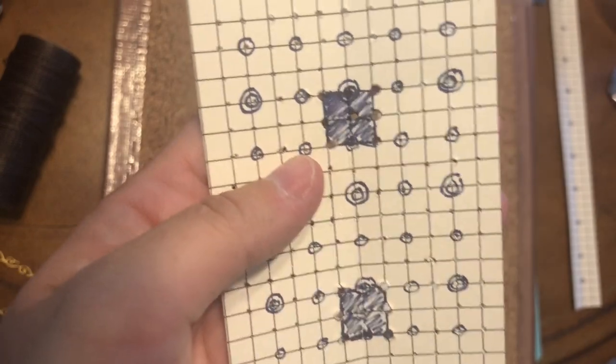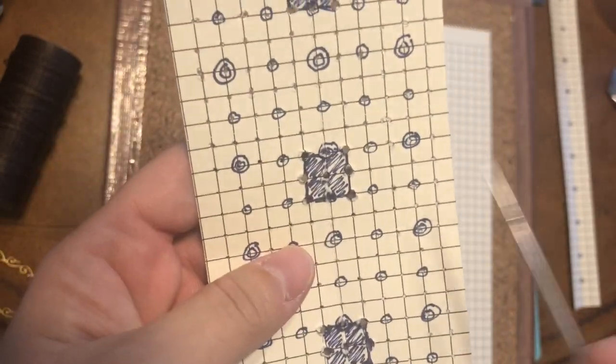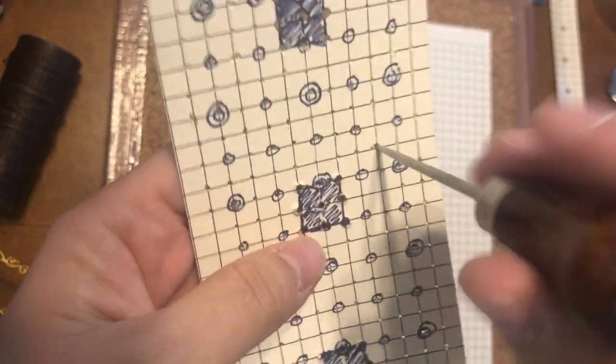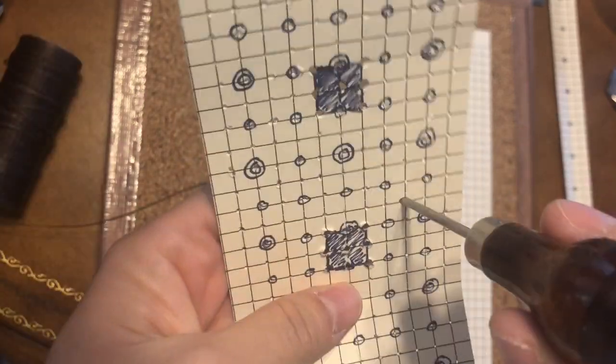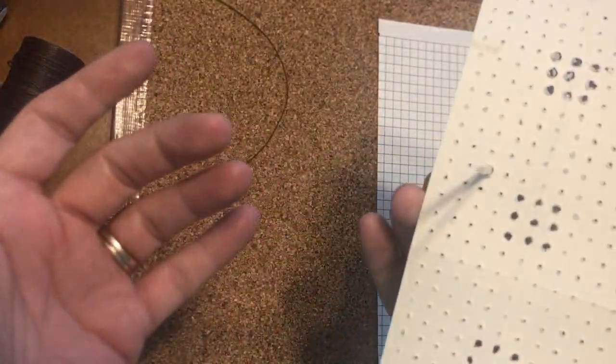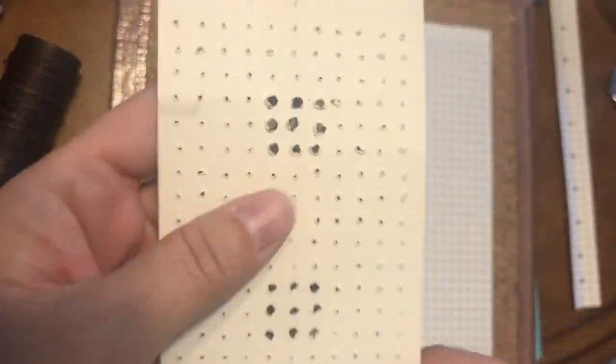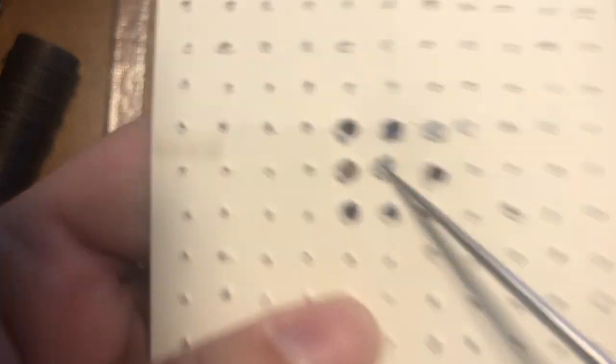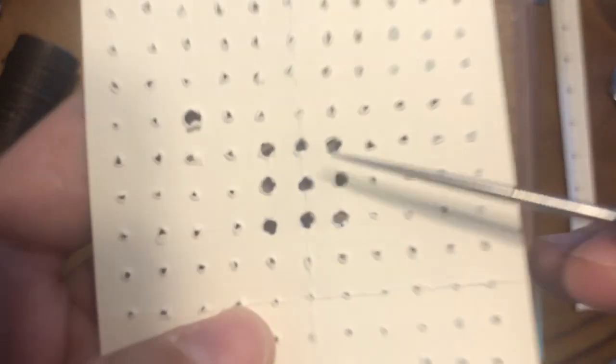This one, I went ahead and poked a hole in all of them, but just a light hole. That way one day when I come back, I don't have to be so precise when I want to poke my holes to be bigger for when I do my stitches. So you can tell where most of my stitches fall is in this little nine cluster.